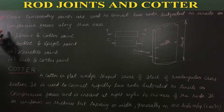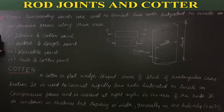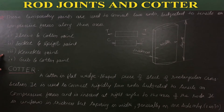In rod joints, we have four main topics. First is sleeve and cotter joint. Second type, socket and spigot joint. Third, knuckle joint. And fourth, gib and cotter joint.